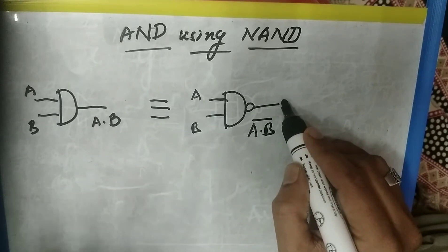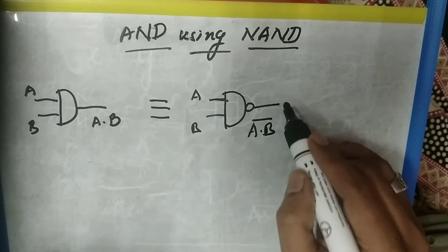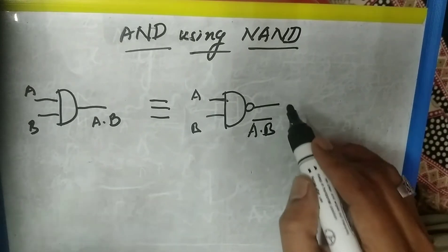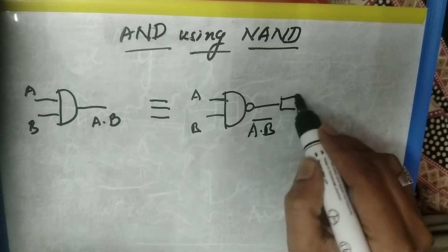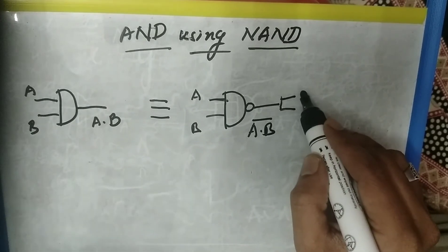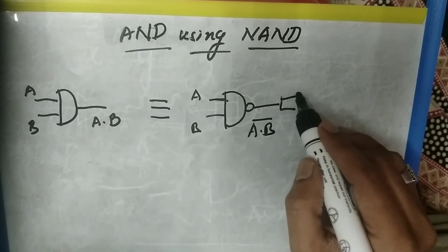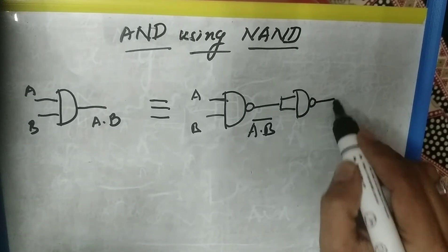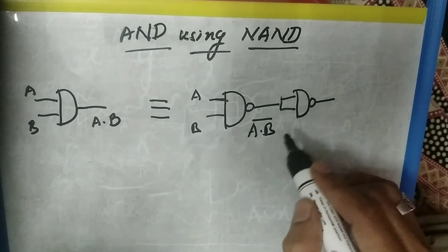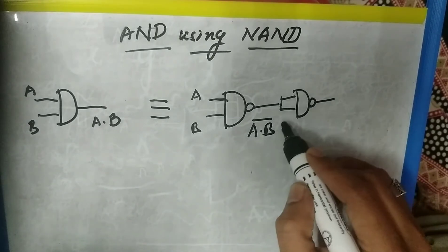So that means we need to remove the bar. To remove this, we can use another NAND gate — using NAND gate only, which we have learnt in the earlier class. This is the inverter we are attaching in series with that.